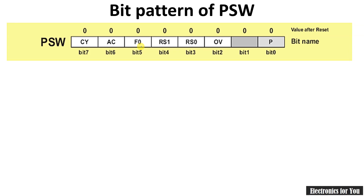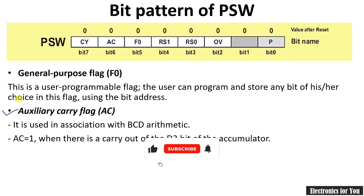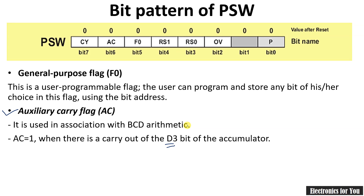The next bit is F0, a general-purpose flag kept for future purposes — currently it has no defined use. The next flag is AC, the Auxiliary Carry flag. This flag is set if there is a carry out of the D3 bit, meaning a carry is generated from the lower nibble to the higher nibble. It is used in association with BCD arithmetic to convert binary numbers to BCD, and it is controlled by the microcontroller itself, not by the user.